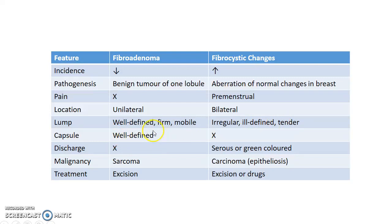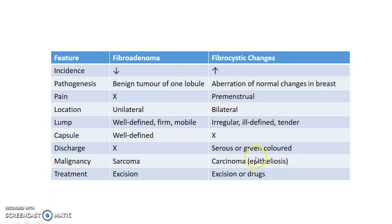The lump will have a well-defined capsule in case of fibroadenoma whereas there won't be any capsule in fibrocystic breast changes. There won't be any discharge in fibroadenoma whereas there will be serous or green-colored discharge in fibrocystic breast changes. Both conditions are benign, but rarely they can turn malignant — fibroadenoma can rarely turn into sarcoma, whereas if fibrocystic breast changes are associated with epitheliosis they can rarely turn into carcinoma.